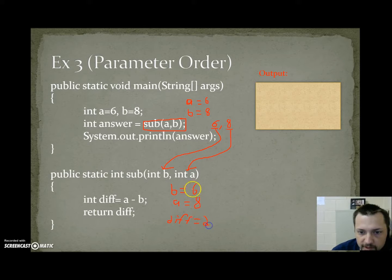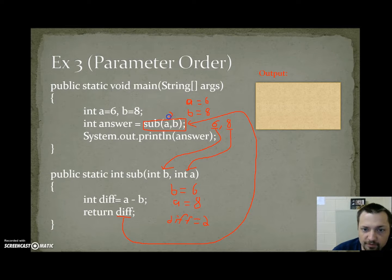And the reason I'm really doing this example is to show you, see, I called it a, I called it b. Down here, it's called b, a. These are definitely different variables. So I'm going to send this back. This will hold the value 2, and the output will be 2.